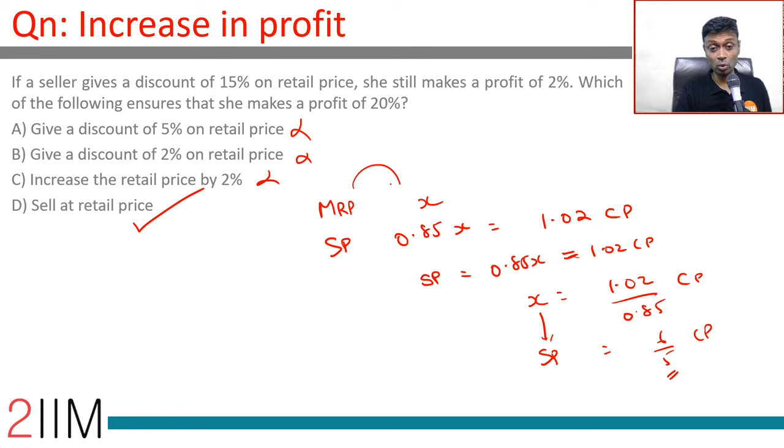So the discount makes her price clash. If the selling price were X, then X is 6 by 5 times CP. That'll be a 20% profit. So she should not give any discount if she wants to make a profit of 20%.